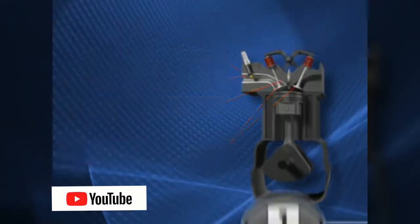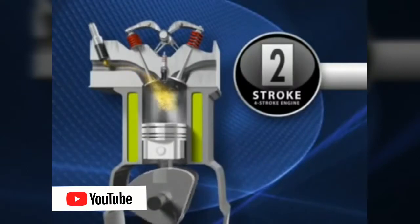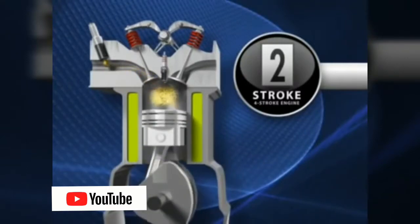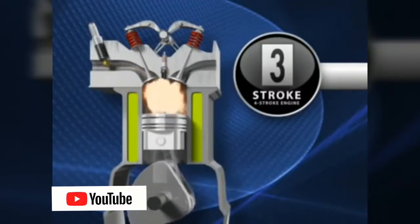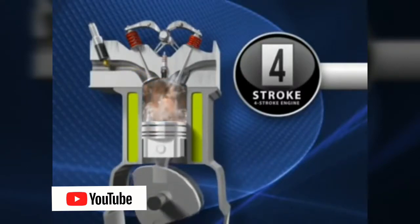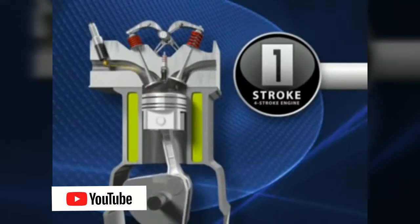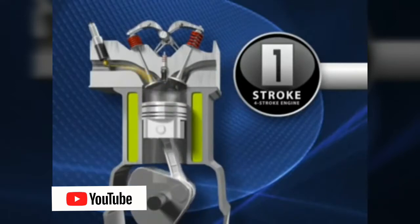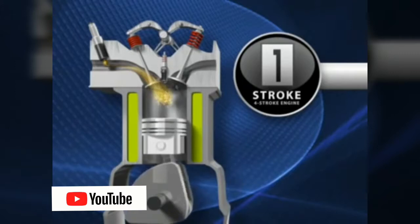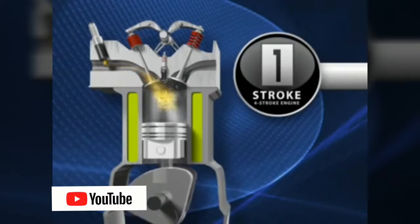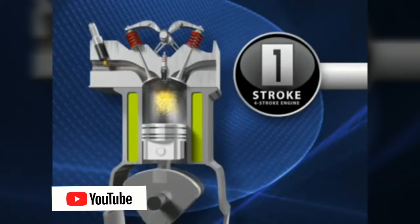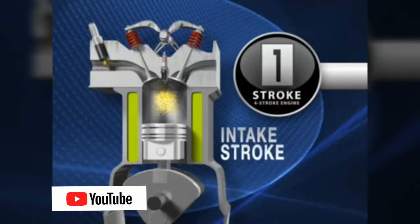A four-stroke engine is called a four-stroke because four up and down motions are needed to complete the cycle. In the first stroke, the piston travels downward as the intake valve opens and a mixture of air from the atmosphere and a metered amount of gas from the electronic fuel injector enter the cylinder. This is called the intake stroke.